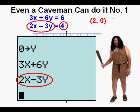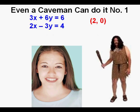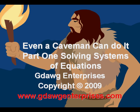It looks like prosperity is just around the corner — and probably a 21st century girlfriend as well. If you have a job opportunity for Og or something for him to work out, email it to gdog at gdog enterprises dot com. This has been 'Even a Caveman Can Do It — Part One: Solving Systems of Equations.' Thanks for viewing.